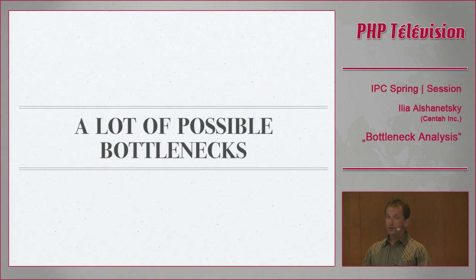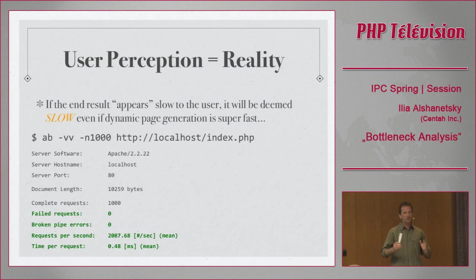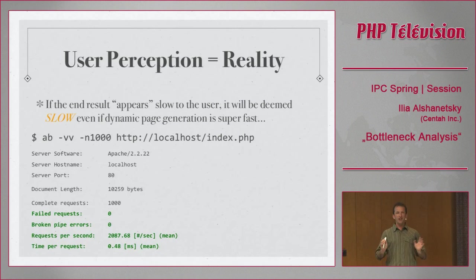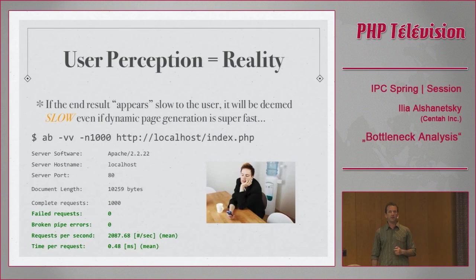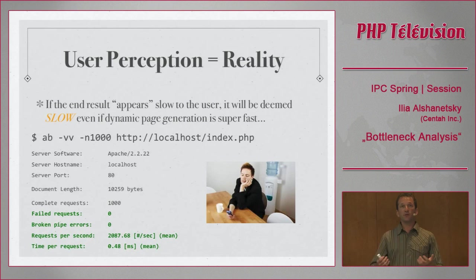There are many sources of bottlenecks, so let's start from the browser. A common mistake: a developer completes an application, fires up Apache Bench, hits the server with requests, sees 2100 requests per second, and thinks there's no issue. The challenge is that most users use a web browser, not Apache Bench. The browser needs to parse HTML, load JavaScript, CSS, and images, and do pre-processing. Only then does the user see the final page. Even if the server is quick, the user may perceive it as slow — and user perception sometimes matters more than actual server speed.